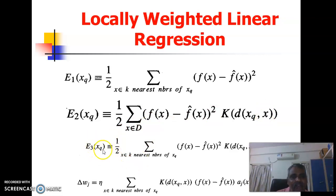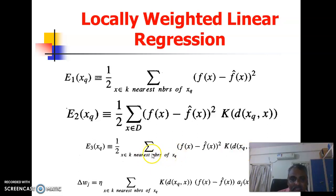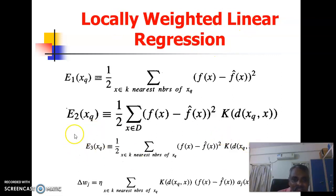Another way is E3(x_q), obtained by combining both concepts: using only nearest neighbors and also applying a discounting function. E3(x_q) = (1/2) * sum over x in k-nearest-neighbors of x_q of [f(x) - f-cap(x)]^2 * K(d(x_q, x)), where x is part of only k nearest neighbors. This is the most suitable expression for locally weighted linear regression — it is both local and weighted.